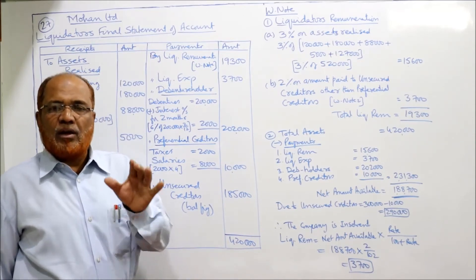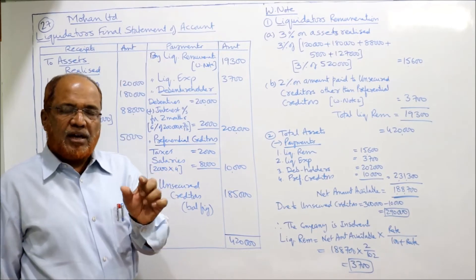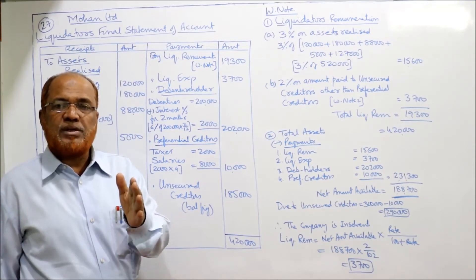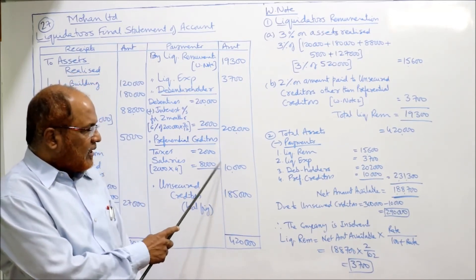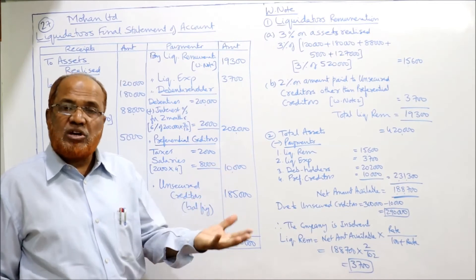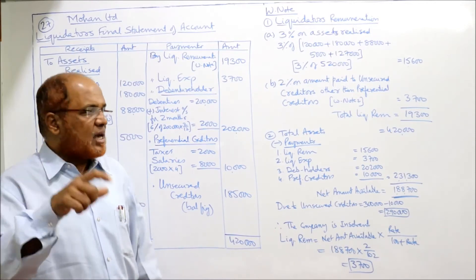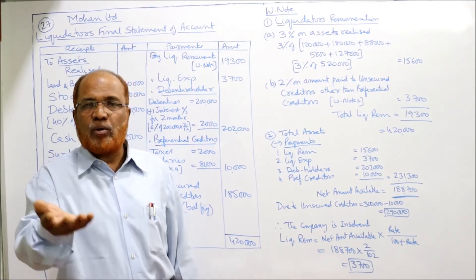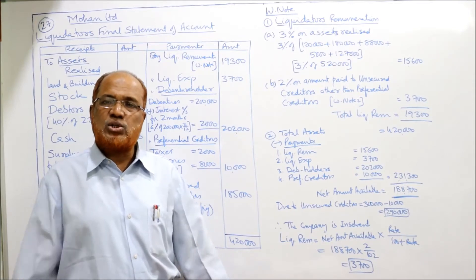Receipts Rs.4,20,000 minus payments Rs.2,31,300 = net amount available Rs.1,88,700. This is compared with the amount due to unsecured creditors: Rs.3,00,000 minus Rs.10,000 (preferential portion segregated) = Rs.2,90,000. Since Rs.1,88,700 is less than Rs.2,90,000, the company is not in a position to make full payment to unsecured creditors — it is an insolvent company.